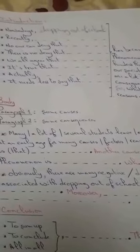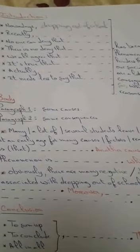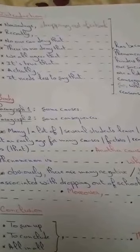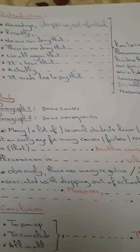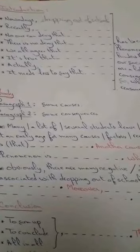Of course, there are a lot of causes and consequences of such a problem, so what are some — and I want you to please underline 'some' to limit the causes and consequences — so what are some of its reasons and effects? Also, we can replace 'nowadays' with 'recently,' or use expressions like 'no one can deny that,' 'there is no denying that,' 'we all agree that,' 'it's true that,' or 'in fact.' Another option is: 'It needs at least to say that dropping out of school has become a big or dangerous phenomenon or problem.'